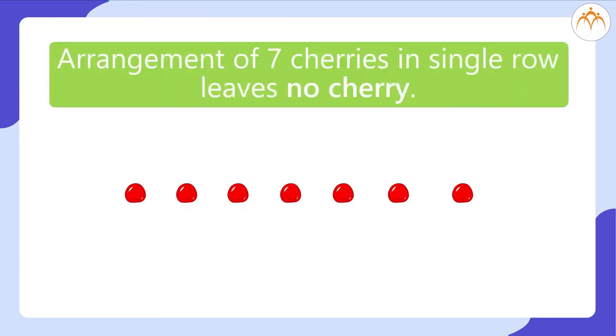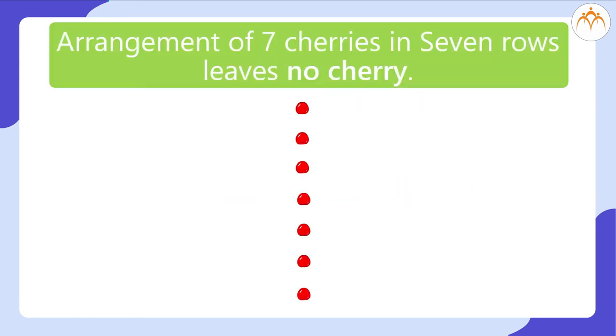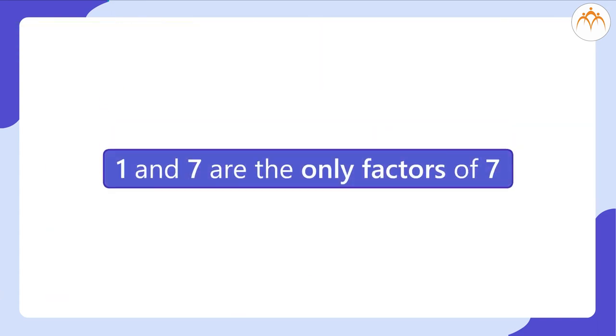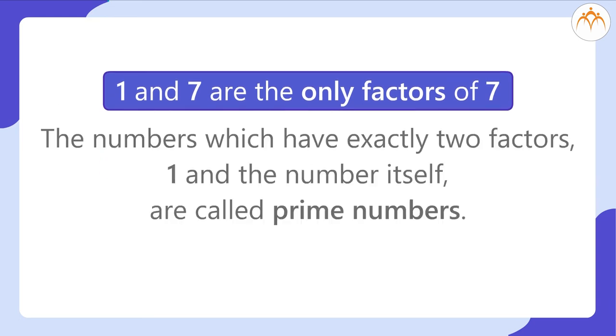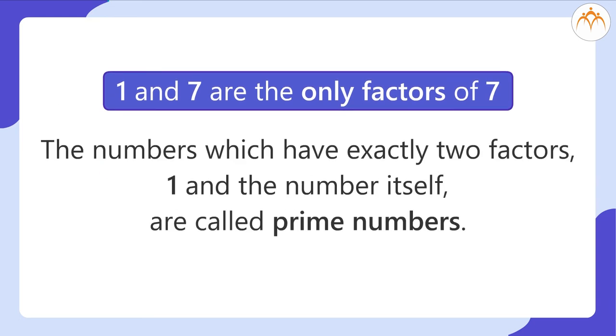That means, we can divide 7 cherries only in the groups of 1 or in group of 7. Thus, 1 and 7 are the only factors of 7. The numbers which have exactly 2 factors, 1 and the number itself, are called prime numbers.